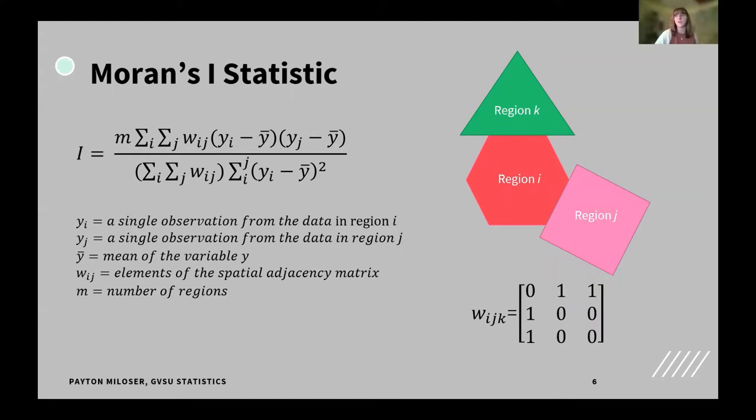Moran's i is this fun equation over here and it's actually very similar to the correlation coefficient formula. If you're familiar with that, it's just a measurement of the relationship between a variable x and a variable y. In our case, our x and our y are both counties and we're trying to see how fast COVID is spreading between certain counties. All that has been added is this adjacency matrix, WIJ.